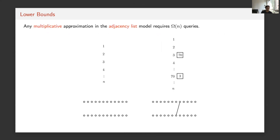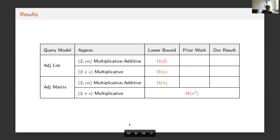In the adjacency list model, any multiplicative approximation must distinguish whether the graph is empty or has one edge, requiring queries to Ω(n) vertices. For multiplicative-additive approximations, we can prove a lower bound of Ω(average degree), though I won't go through it here. Here's a summary table of known lower bounds: for multiplicative approximations, Ω(n) in the adjacency list model and Ω(n²) in the adjacency matrix model; for multiplicative-additive approximations, Ω(average degree) in the adjacency list model.